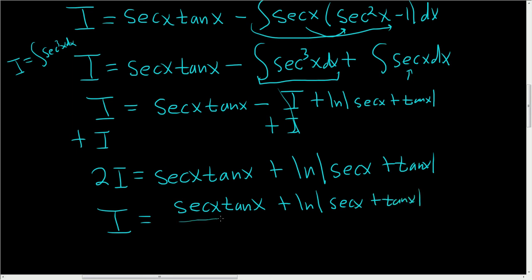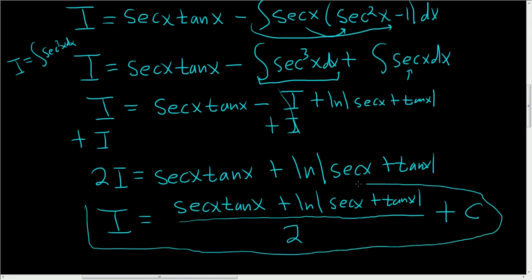All divided by 2, and then we'll add the plus c at the very end. So that's how you integrate a secant cubed. There are other ways to integrate it but I believe this is the easiest way.